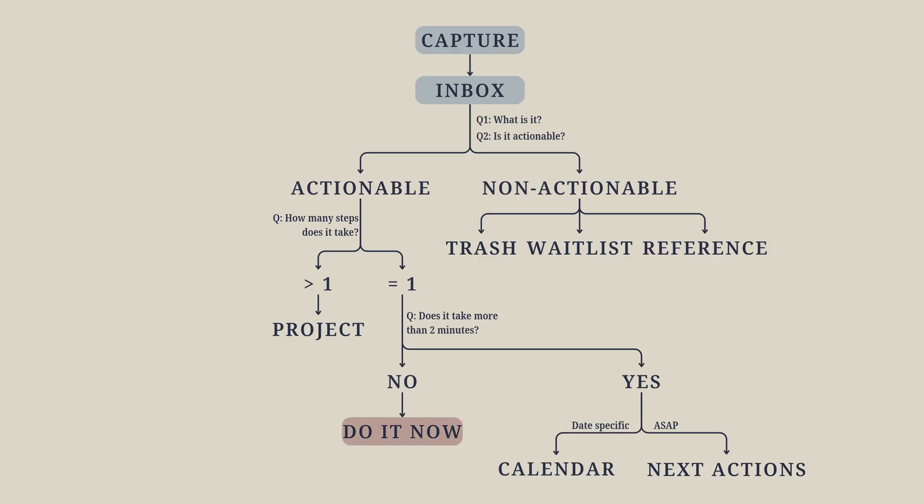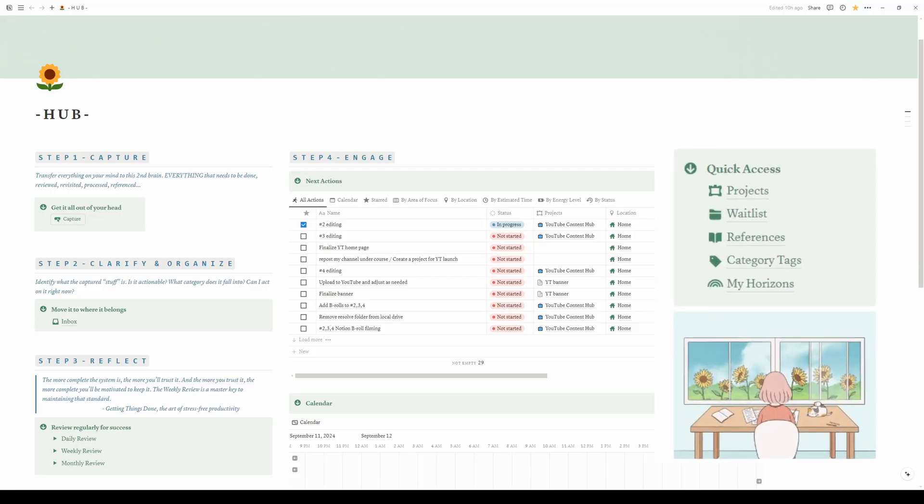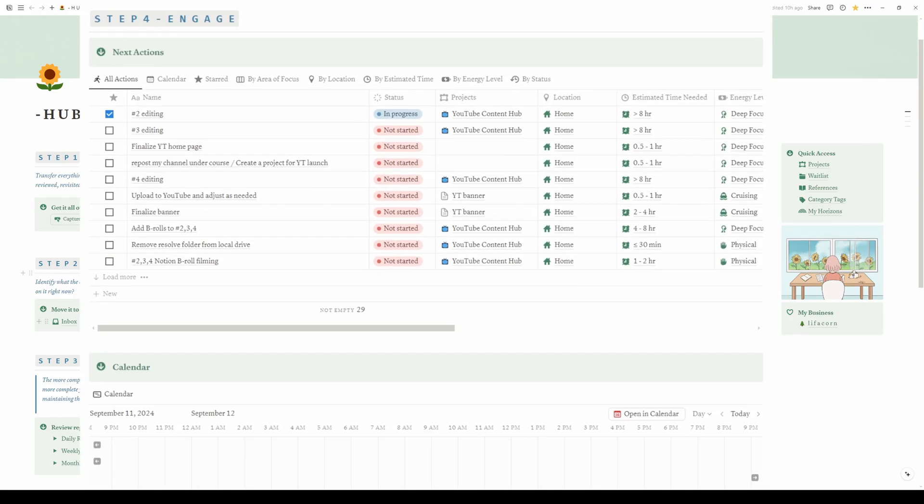Among the seven possible outcomes from categorization, two are immediate actions: either do it now for tasks under two minutes, or trash for non-actionable items. That leaves us five databases to manage the rest. Remember the quick access menu on the right side of the homepage? That's where you'll find three of these destinations: projects, waitlist, and references. We briefly touched on category tags earlier, and we'll dive deeper into my horizons in the final video of this series. The last two databases, next actions and calendar, are front and center on the homepage.